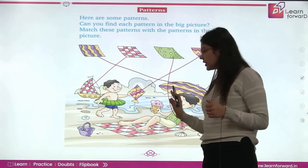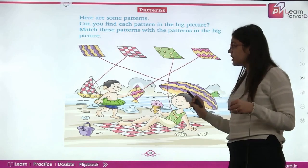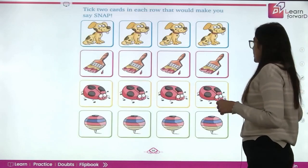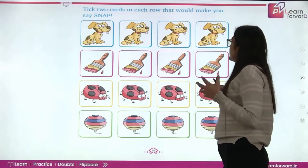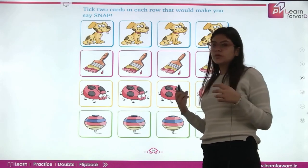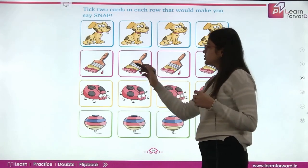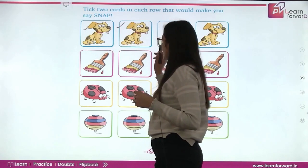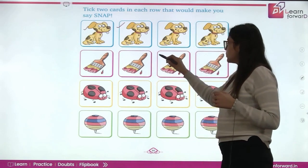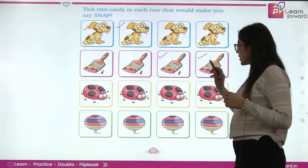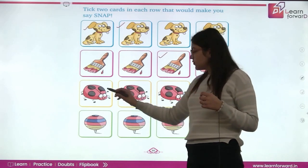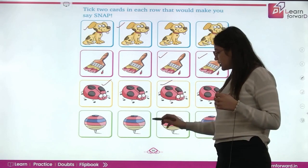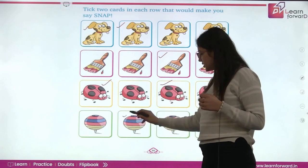You have to match it like this. Jahan pe bhi aapko ye patterns milenge, aapko wo match karne hai. Now, next: tick two cards in each row that would make a snap. We will tick the two cards — so first and second. And in this picture we will tick these two cards. So these are bugs. We will tick these two cards, and in this we will tick these two cards.